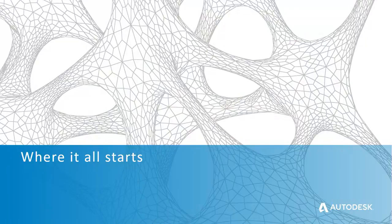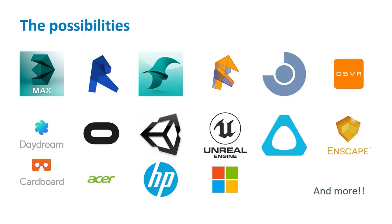So where does it all start? There are so many different ways to go about virtual reality and so many possibilities. You have authoring software like Max, Revit, SketchUp, Rhino — so many out there. You have companies like Fuser, Enscape, Iris, Unity, Unreal getting into it. Hardware manufacturers from Dell, HP, Microsoft, Asus, HTC, and Facebook with the Oculus. There's just a lot out there right now, so where do you start?